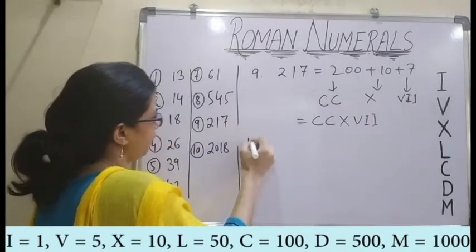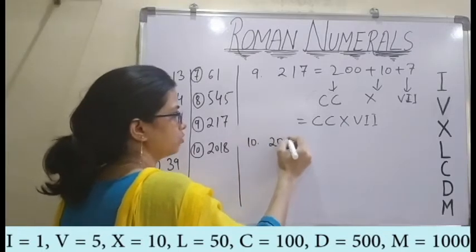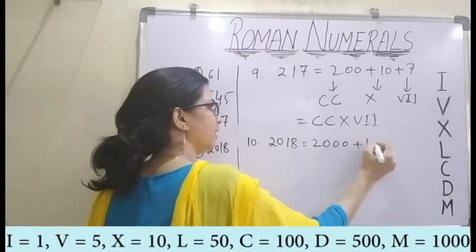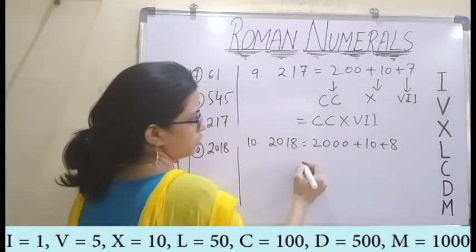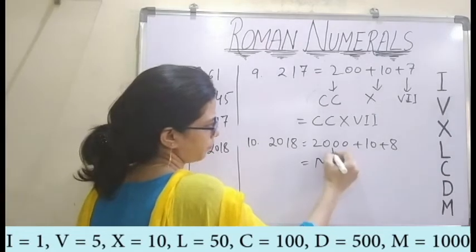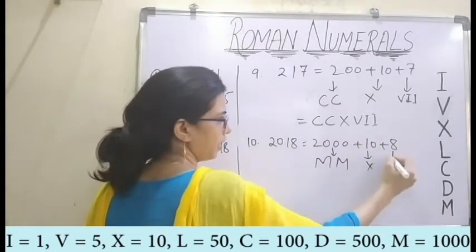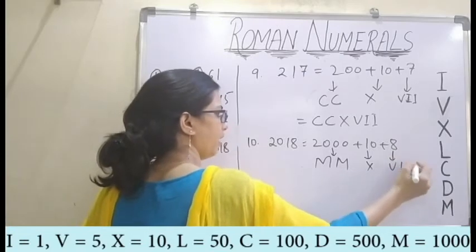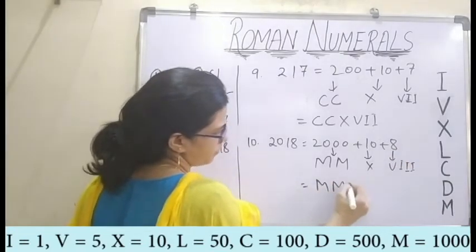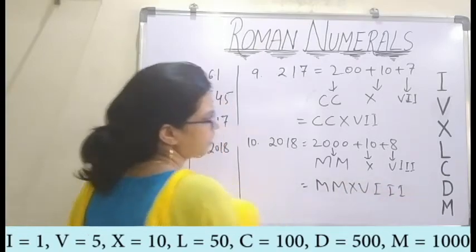Next, for the tenth one, I have 2018, which is 2000 plus 10 plus 8. For 2000 I can write MM. For 10 I can write X. And for 8 I can write VIII. So I get MMXVIII.